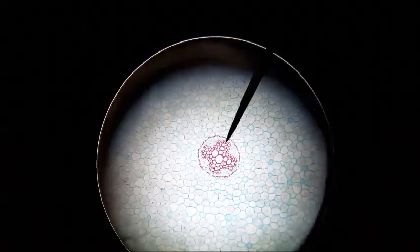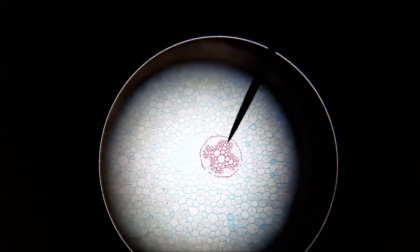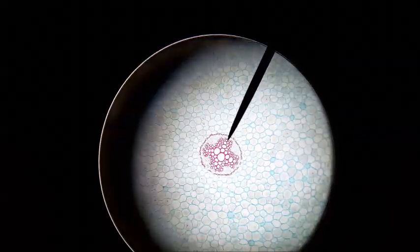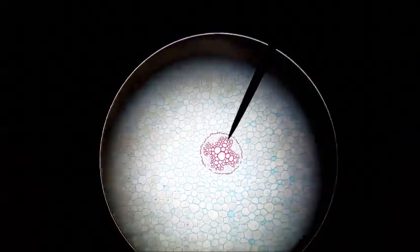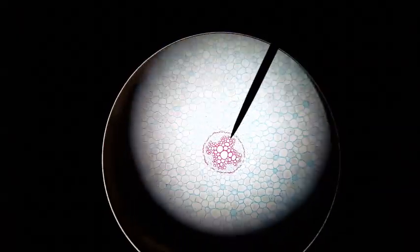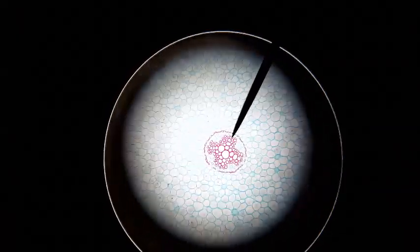The pericycle is a membrane separating the phloem between the arms from the endodermis. Cortex surrounds all.